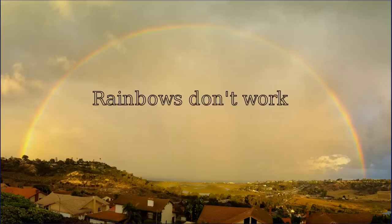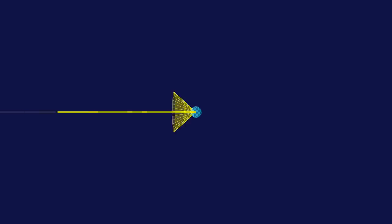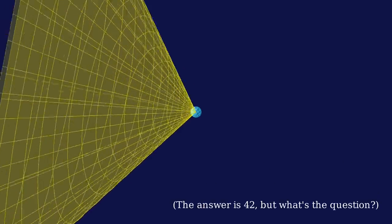You may know how a rainbow forms. Sunlight gets reflected in raindrops at an angle of about 42 degrees. So we see the reflected light if we are somewhere on this cone of reflected rays.